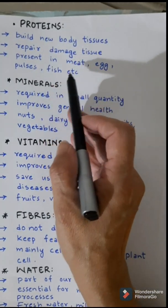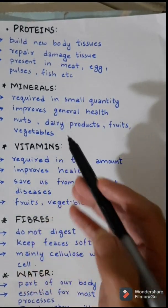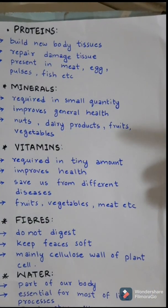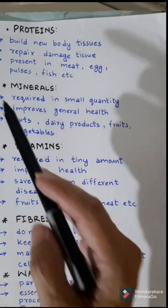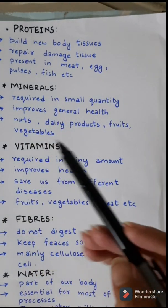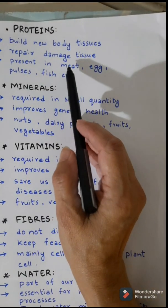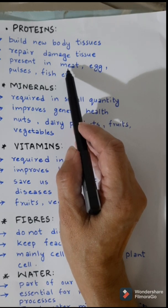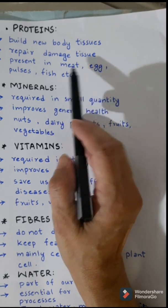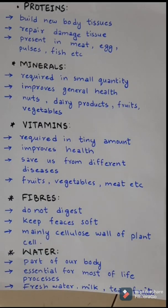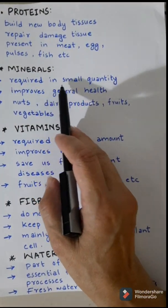Fats are present in oils, butter, eggs, seeds, etc. Proteins are another component of food. They are needed to build our body tissues when they are growing — they help in growth. They are also used to repair damaged tissues; if you cut yourself, new skin is made from proteins. Proteins are present in chicken, mutton, eggs, pulses, etc.